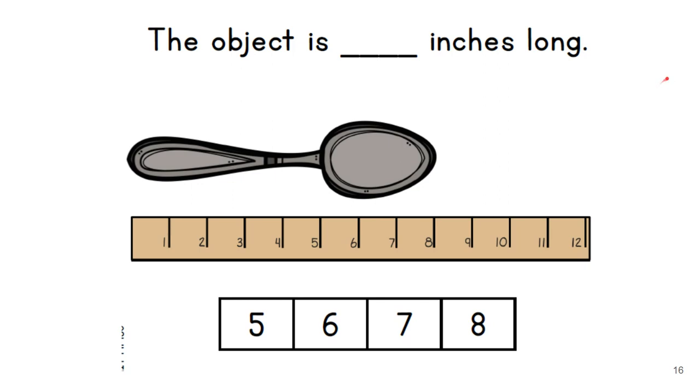Oh, so let's look at this. The object is blank inches long. So I need to look at this ruler underneath here and decide how long is this. So I start at this end and I see how far does it go to the end? Is it five, six, seven, or eight? It's not five because that's not the whole spoon, right? Six is not the whole spoon. Seven is not the whole spoon. So it is eight.